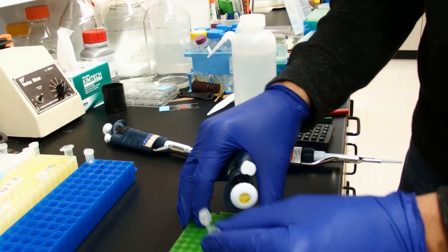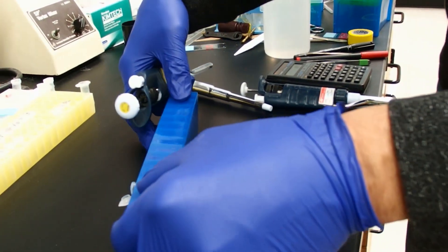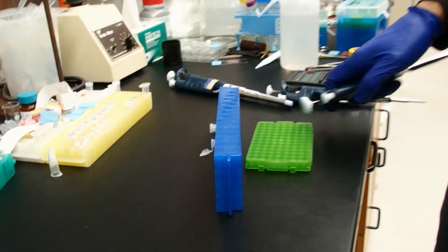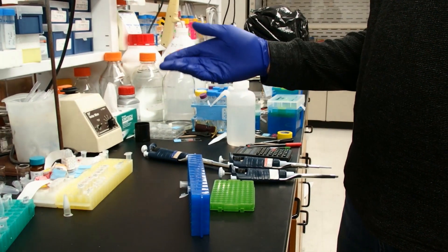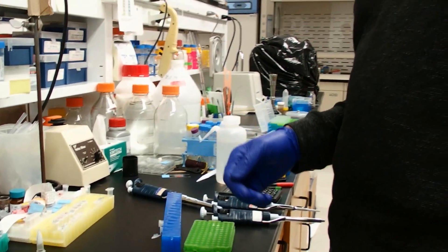Now we have a pellet in there. I'm going to put this in this rack. I'm going to put this on its side for one minute to dry a little bit more. And then you're going to put your desired amount of Tris buffer or TE buffer or water if you want that in there, and vortex to resuspend it. And that's it.